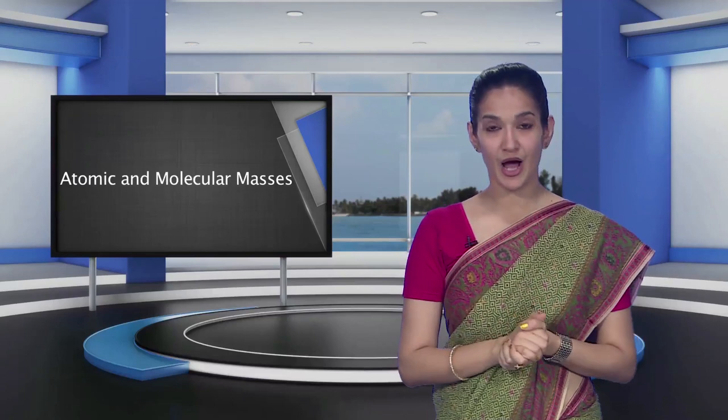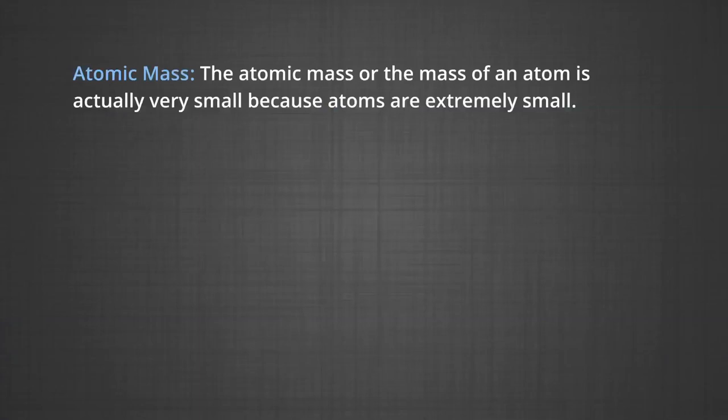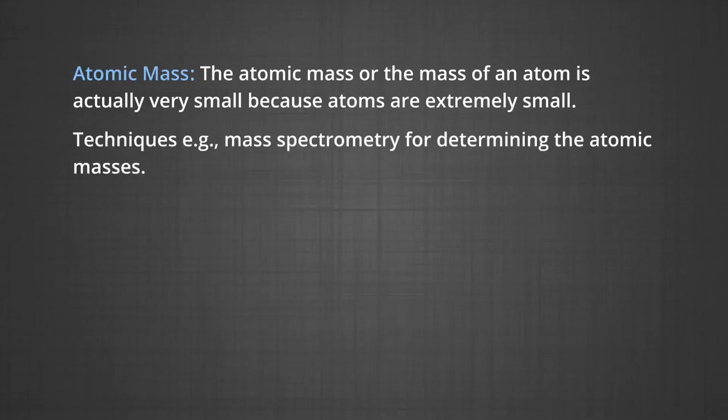Let's now learn about atomic and molecular masses. Having some idea about the terms atoms and molecules, it is appropriate to understand what we mean by atomic and molecular masses. The atomic mass or the mass of an atom is actually very small, because atoms are extremely small. Today we have sophisticated techniques, for example mass spectrometry, for determining atomic masses fairly accurately.